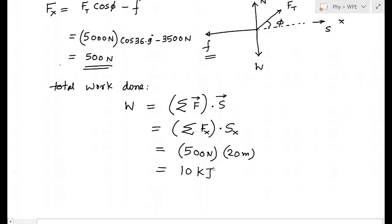Both methods give the same answer of 10 kilojoules total work done. In summary, you can either calculate work done by each individual force and sum them, or find the net resultant force and multiply by displacement. The choice of method depends on the problem. The next video will cover the work-energy theorem and related problems.